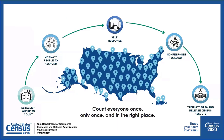We're estimating there to be about 330 million people in the United States living in more than 140 million households, and we must count each and every one of them. To do this, we have five basic steps. We start by figuring out where people live. This decade, we did this in a combination of in-office and in-field work. For the majority of addresses, we verified they existed in an office setting using satellite imagery and address lists provided by state, local, and tribal governments. For the remaining addresses, we sent census takers into the field with handheld devices. This operation, called address canvassing, took place in August of 2019 and was our first major operation for the 2020 Census.